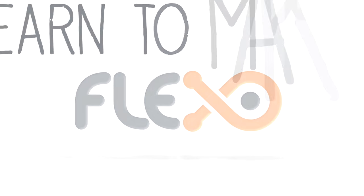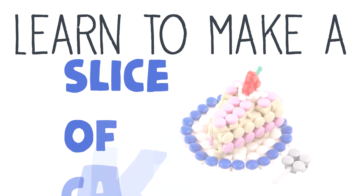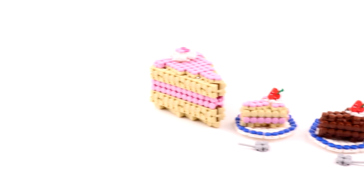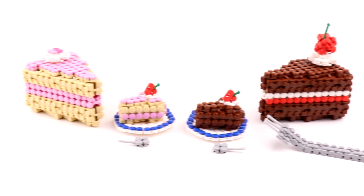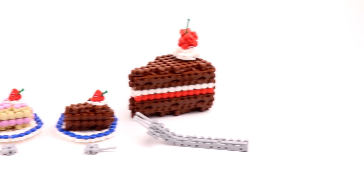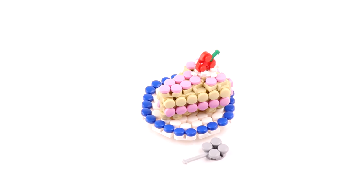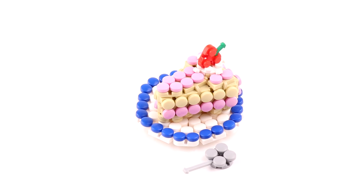Welcome along Flexo fam. Whoever said you weren't allowed to play with your food? Certainly not us. This week we're making a slice of cake. Now there's many different kinds of cake that you could make. Chocolate cake, cheesecake, we're going for a wee slice of cheesecake, a plate and a spoon.